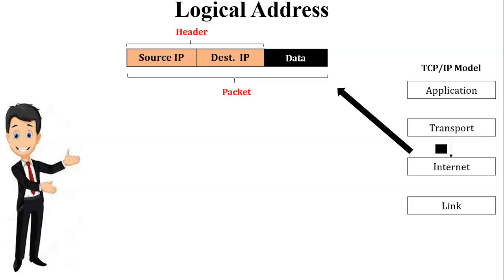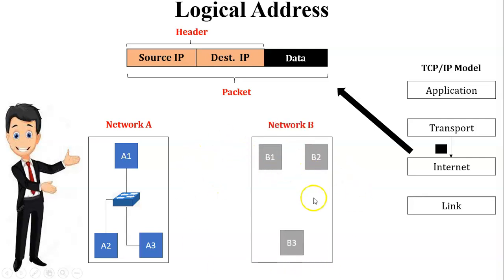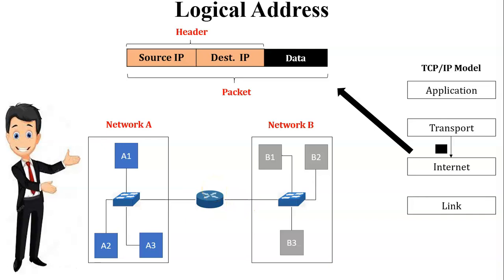Now I will show you a scenario of data transfer from the same network and different network through the IP address. Here is Network A with three PCs — A1, A2, and A3 — connected through a switch. Network B has three PCs — B1, B2, and B3 — connected through a switch. A router connects both networks. In this example, A1 is the sender and A3 and B3 are the receivers. A3 is in the same network as A1, while B3 is in a different network.